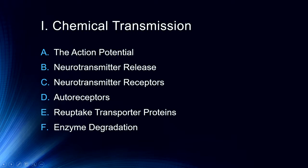We'll talk about neurotransmitter receptors, autoreceptors, reuptake transporter proteins, and enzyme degradation. These are all important parts of this chemical transmission process that both trigger neural signaling and also turn off neural signaling.